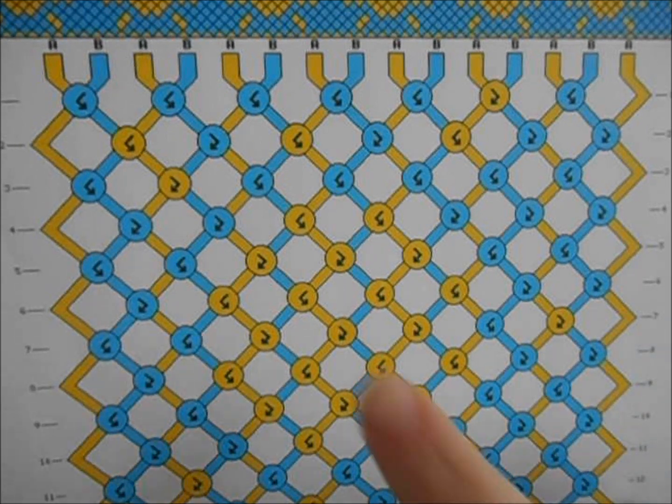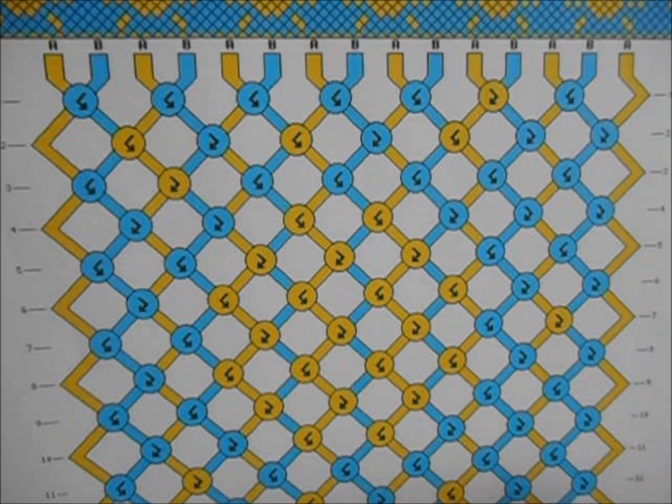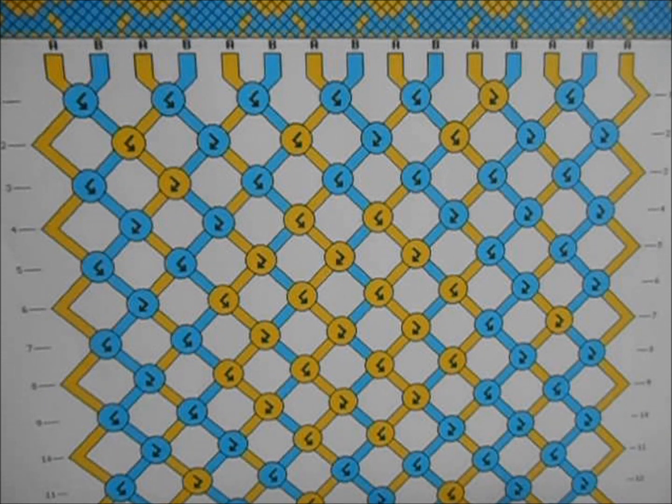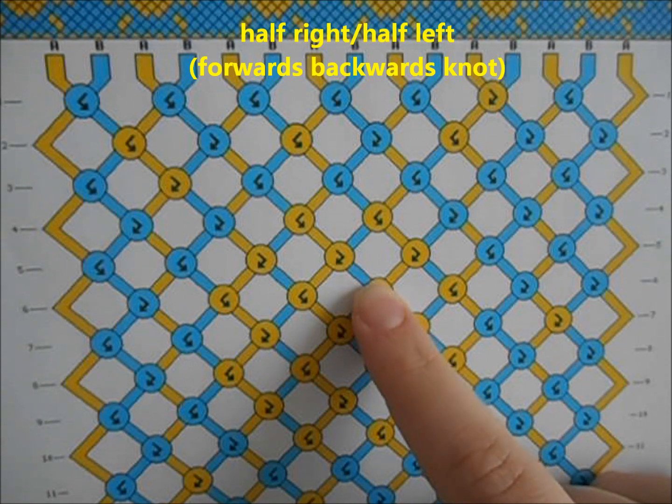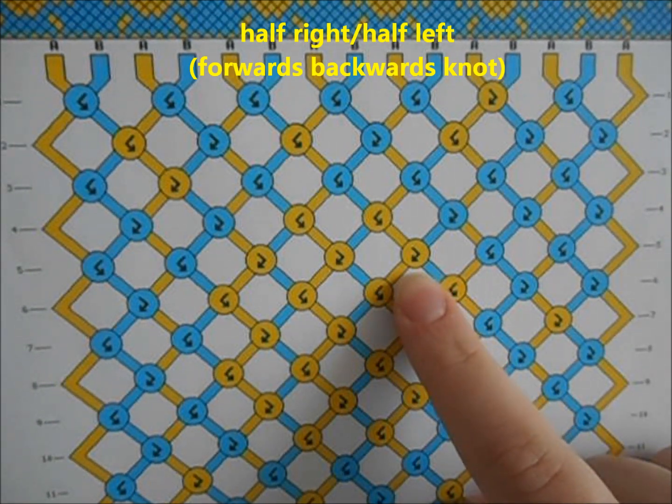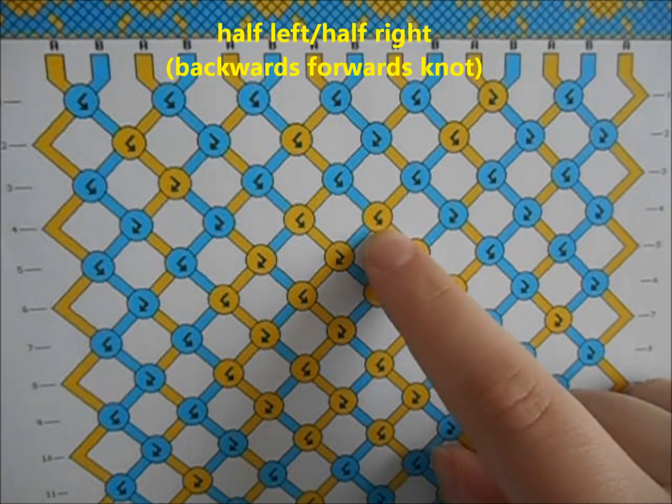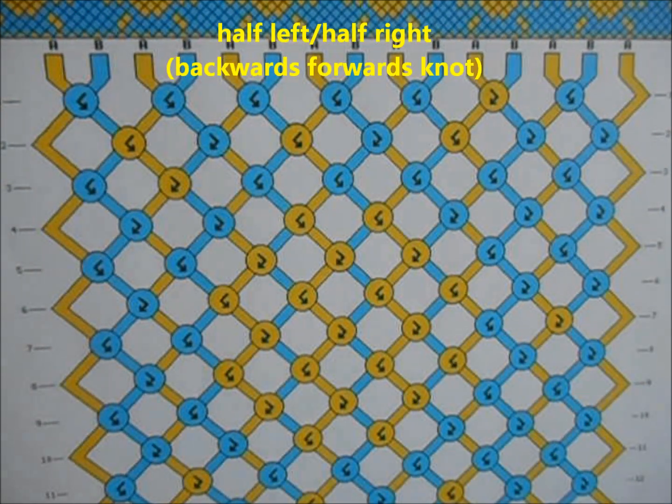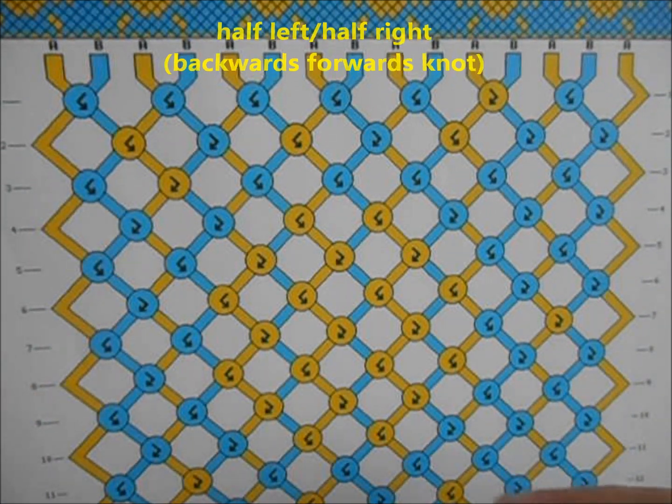In a pattern like this one, you see a more curved or crooked arrow. When it goes half to the left then to the right, we have a forwards backwards knot. When it goes to the left and then to the right, you have a backwards forwards knot. The arrow symbolizes where your threads will go.